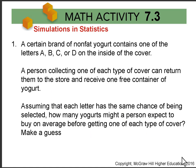In number one, the scenario is there's a brand of yogurt and the covers have the letter A, B, C, or D on the inside. If you collect one of each type of cover, you get a free yogurt. If you assume that those letters are equally likely of being selected, how many yogurts might you have to buy on average to get one of each type? Pause and make a guess about this — how many yogurts would you need?